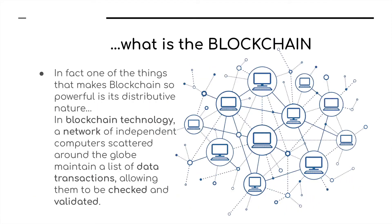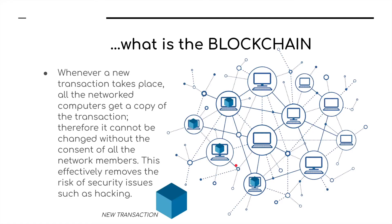One of the things that makes blockchain so powerful is its distributive nature. In blockchain technology, a network of independent computers scattered all across the globe maintain a list of data transactions, allowing them to be validated and checked. Whenever a new transaction takes place, all the network computers get a copy of the transaction. Therefore, it cannot be changed without the consent of all the network members, effectively removing the risk of security issues such as hacking.